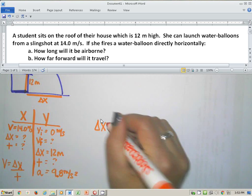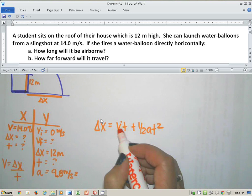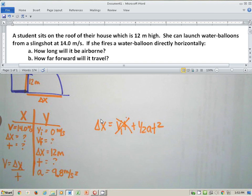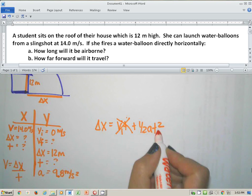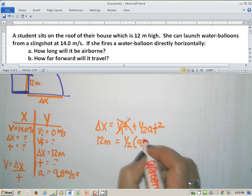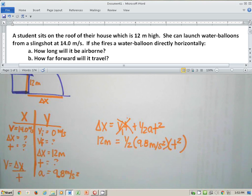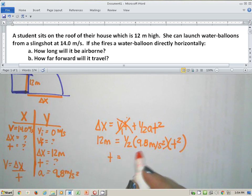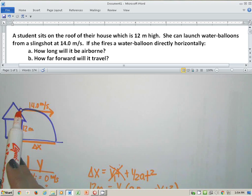Delta X is equal to VI T plus one half A T squared. We already established that if zero is going in here, this is coming out of it. It's just going to go away. So it's going to leave me with delta X is equal to one half A T squared. So let's start plugging stuff in. This will be 12 meters, one half A we're going to use as 9.8 meters per second squared, and T I don't know, so it's T squared. And if we do the math for this and we put everything in, you're going to get a T that is equal to like 1.56 and a bunch more digits seconds.